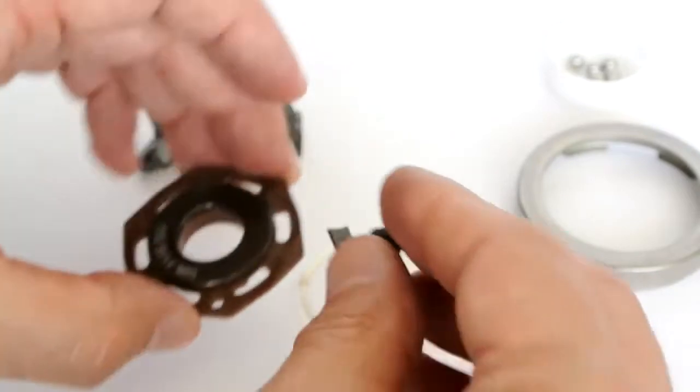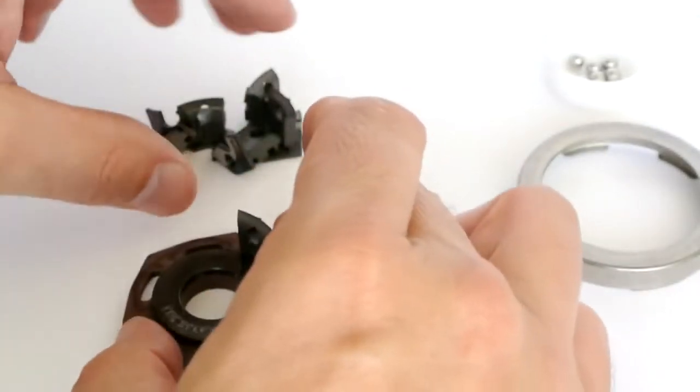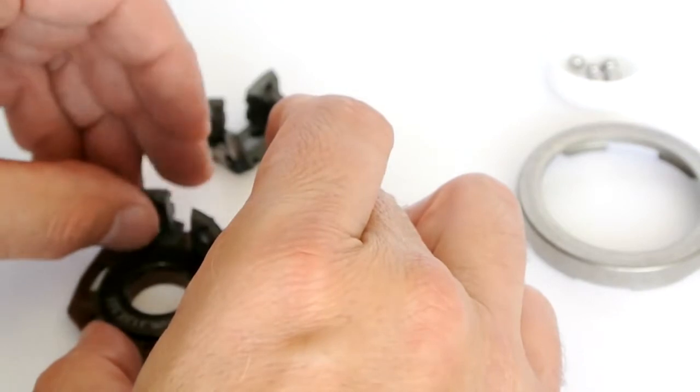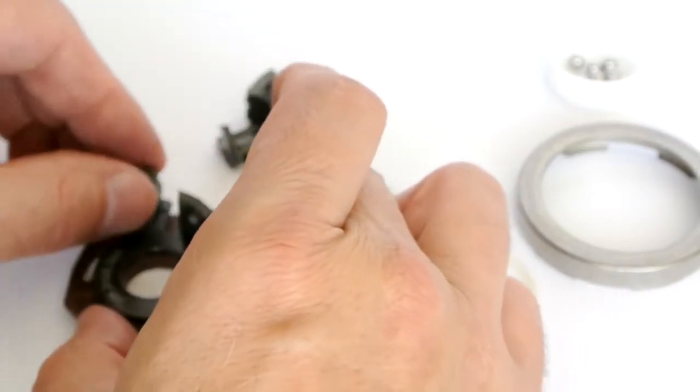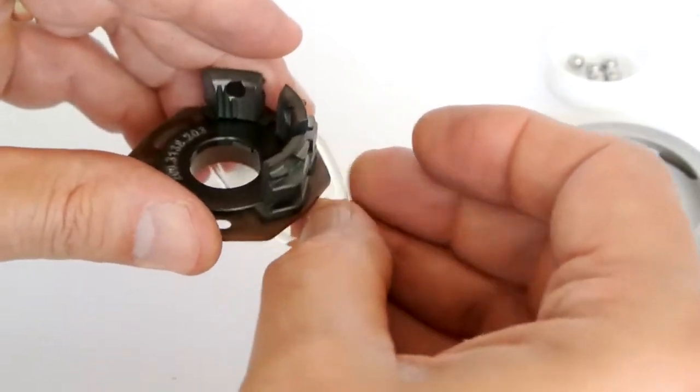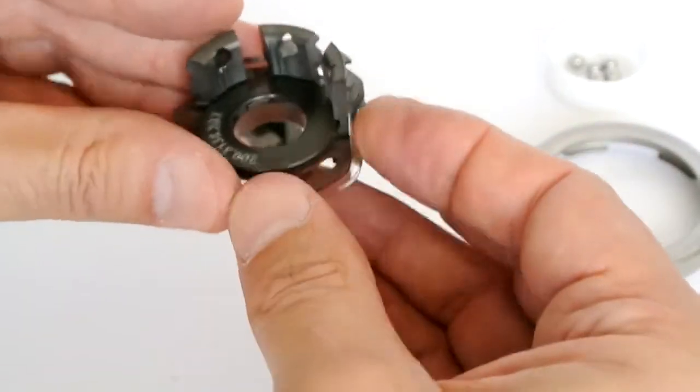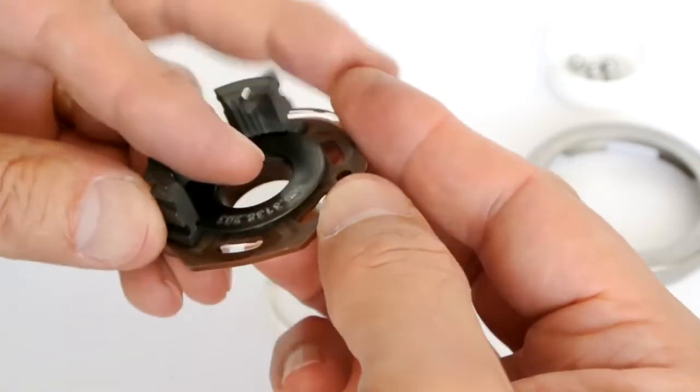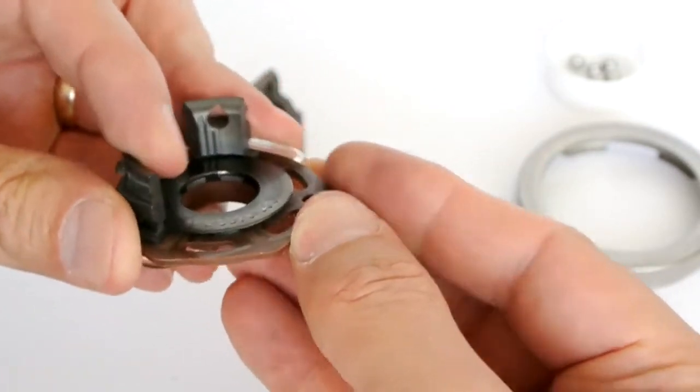So we're going to put the V5 segments in. I start by putting in three segments, and I then take one of the O-rings and wrap it around in the lower groove on those three, and that helps hold those in place while I install the others.